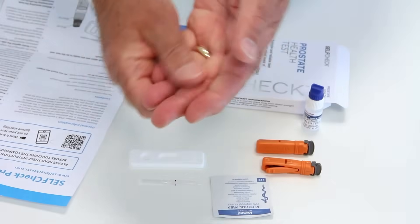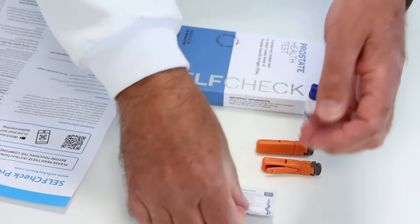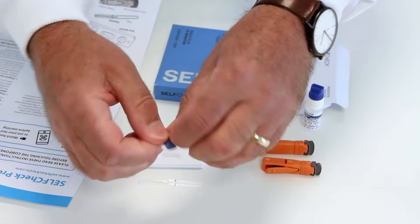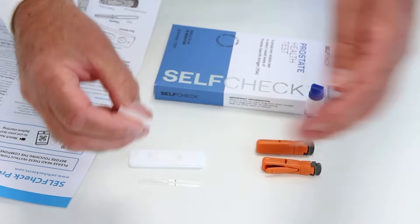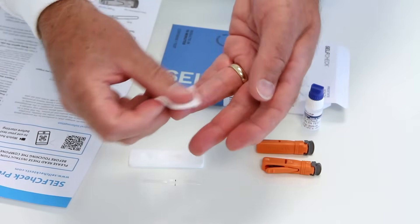Hold your hand below waist height and gently massage the middle or ring finger. This increases the blood flow. Wipe your finger with the alcohol swab, then allow your finger to dry for a few moments.